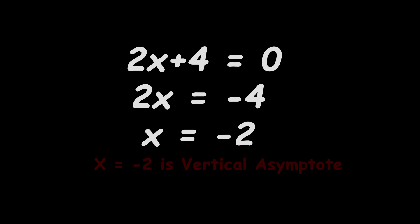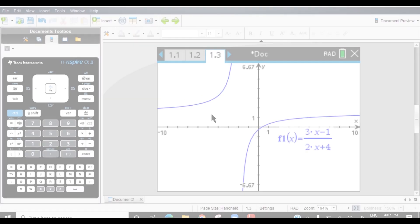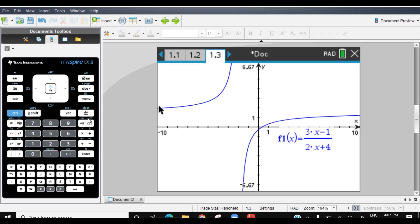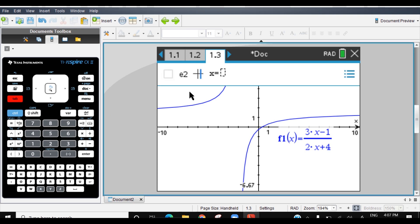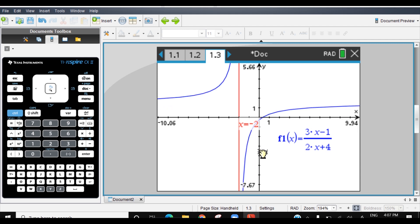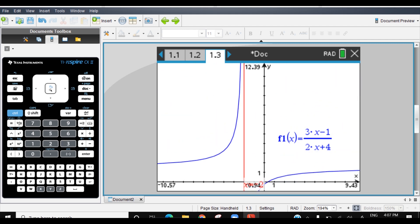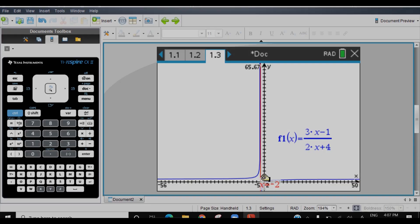x = -2 is the vertical asymptote for the function f(x). We can again verify this by inserting a line x = -2. Now here again we can see how the graph approaches this asymptote but never touches it.